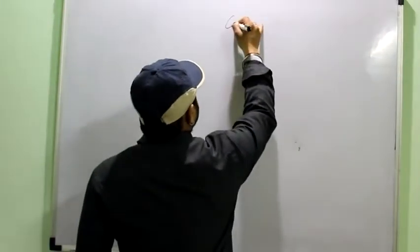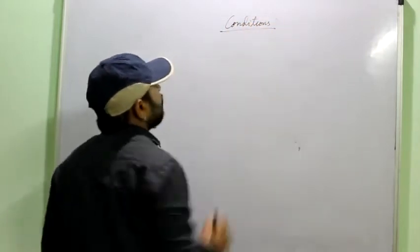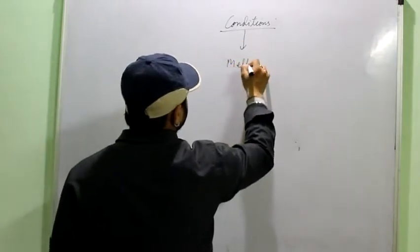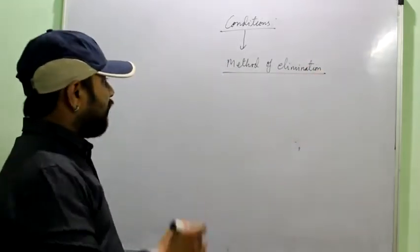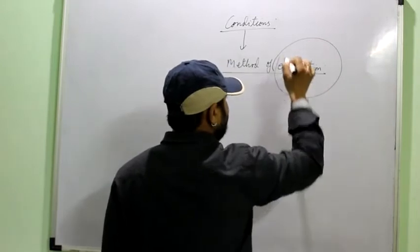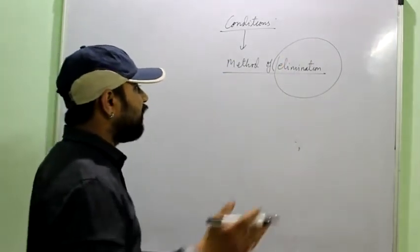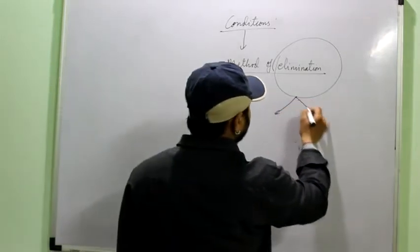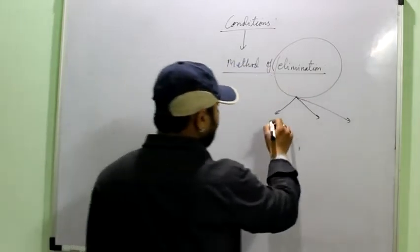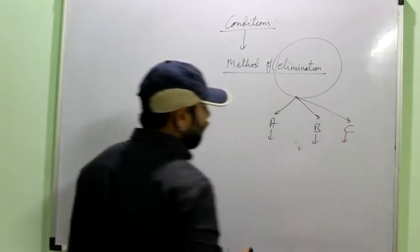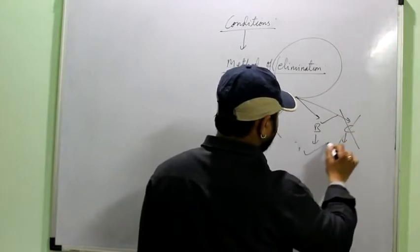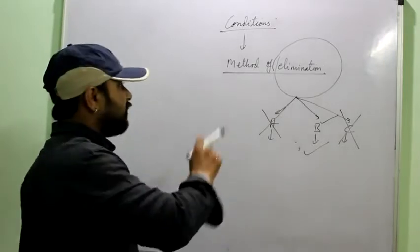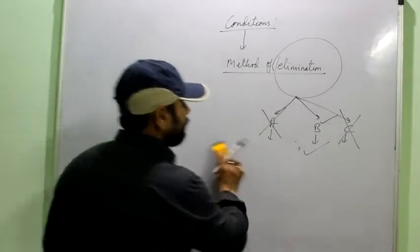Before moving on to the explanation of the consumer's equilibrium, I would like to tell you that all these equilibriums have certain conditions. And any condition can be explained with the help of method of elimination. Method of elimination, elimination you already know the meaning - to remove something. Like suppose if I have three options, three conditions and I have to prove that this condition is correct. Method of elimination simply means that you prove that this is wrong and this is wrong, so obviously this is correct. This method is used for explaining all the conditions in economics, whether it is consumer equilibrium or producer's equilibrium or it may be any other condition.